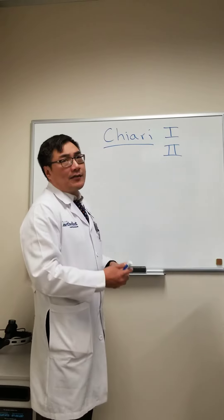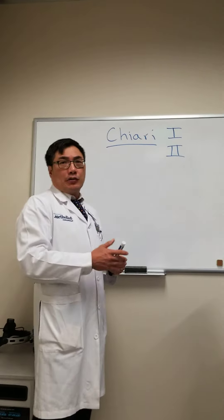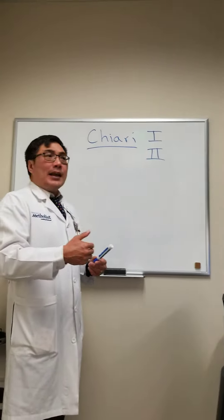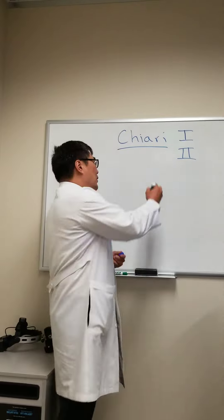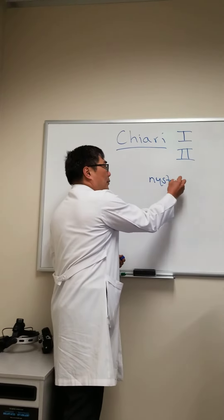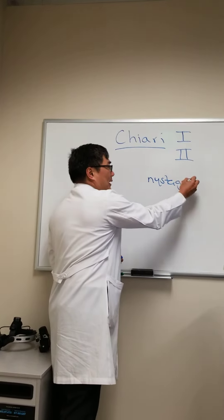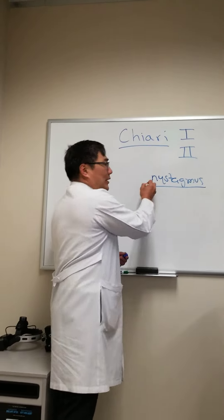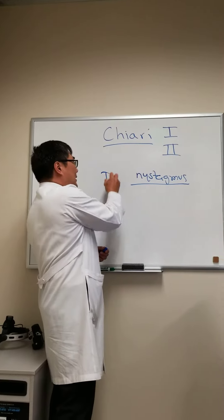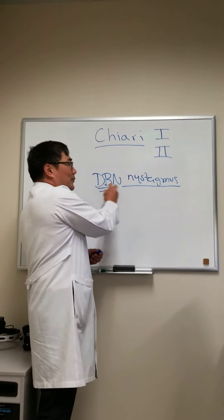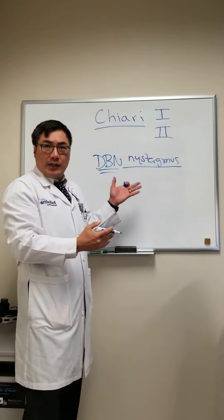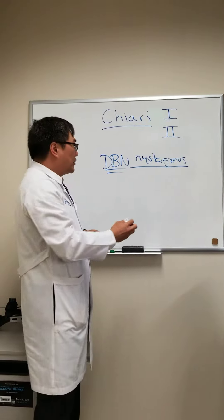The way the Chiari malformation — both type 1 and type 2 — comes to neuro-ophthalmology is with nystagmus. One of the most common forms of nystagmus we see with the Chiari malformation is downbeat nystagmus, but other forms of nystagmus can also occur.